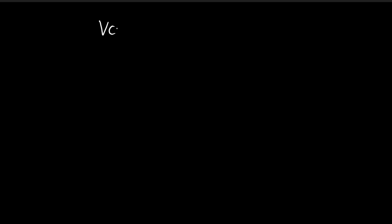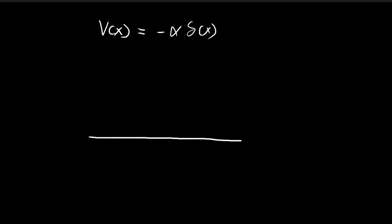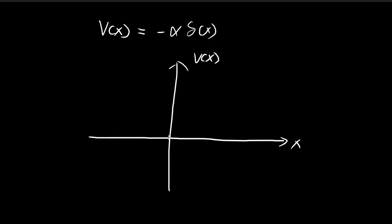We're going to discuss the case of the potential being equal to some constant negative alpha multiplied by the Dirac delta function — so this is going to be a negative number times the delta function. You can visualize this with a graph: everywhere else it's equal to 0, and right at x = 0, the Dirac delta function shoots to infinity, forming an infinitely tall spike. But since we're multiplying by a negative number, this spike is going to point downwards.